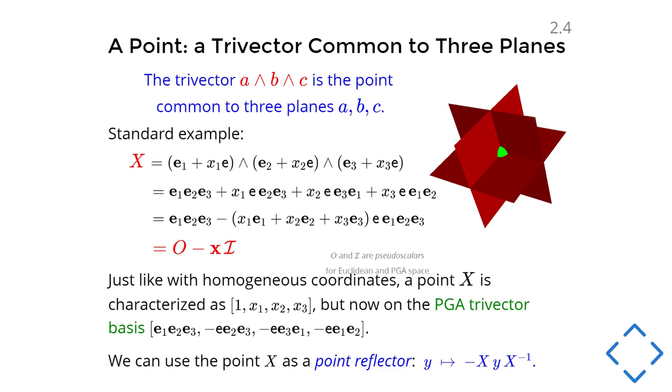So it's homogeneous coordinates, but now not completely isolated from the operations because it's actually a reflector, which is actually the intersection of three planes. And because it is so integrated in the total system, you can make the point reflector as reflecting something like minus X, Y, X inverse with X a point.